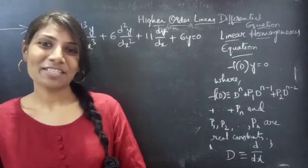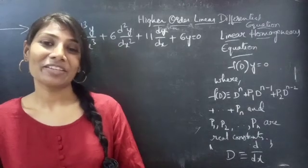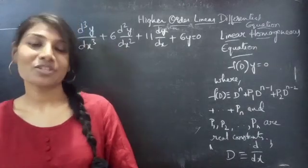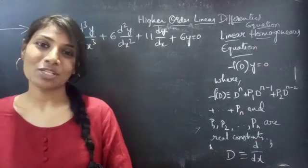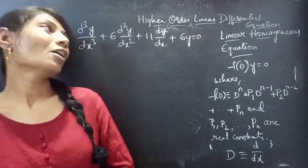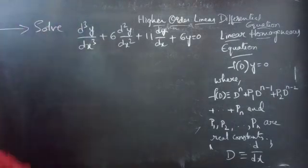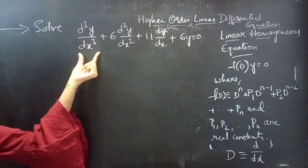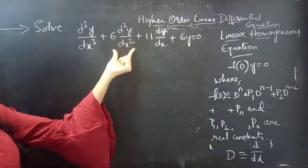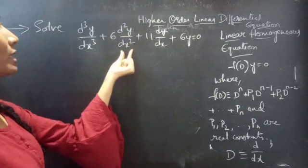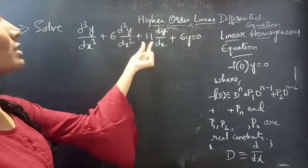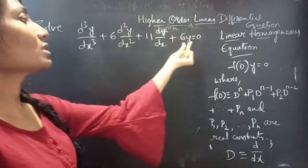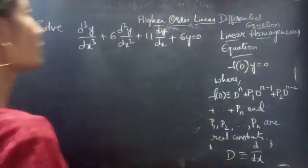Hello everyone, this is Jay Kaltana here. In this video, we are going to solve the given differential equation. Let's get going. The problem: solve d³y/dx³ plus 6·d²y/dx² plus 11·dy/dx plus 6y equals 0.